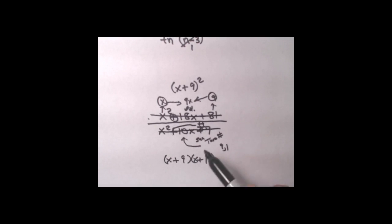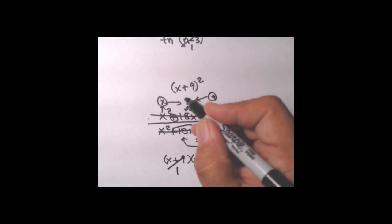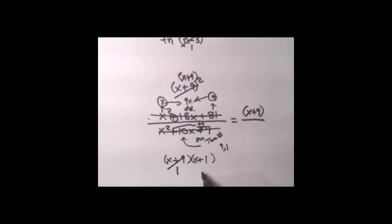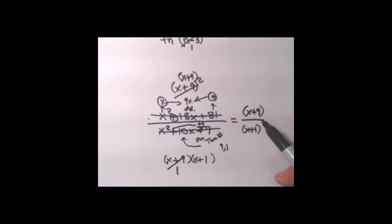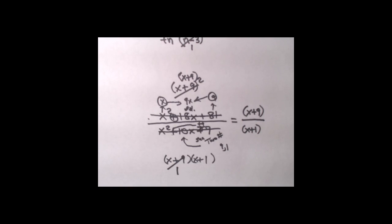We've factored both top and bottom. The top is the quantity x plus 9 squared, and there is a common x plus 9 in the denominator. We reduce one x plus 9 from the numerator's two, leaving a single x plus 9 upstairs and x plus 1 downstairs. We can't go any further because x plus 9 is not the same as x plus 1. The final answer is the quantity x plus 9 over the quantity x plus 1. And now you've seen the important role that factoring plays in being able to reduce these algebraic fractions.